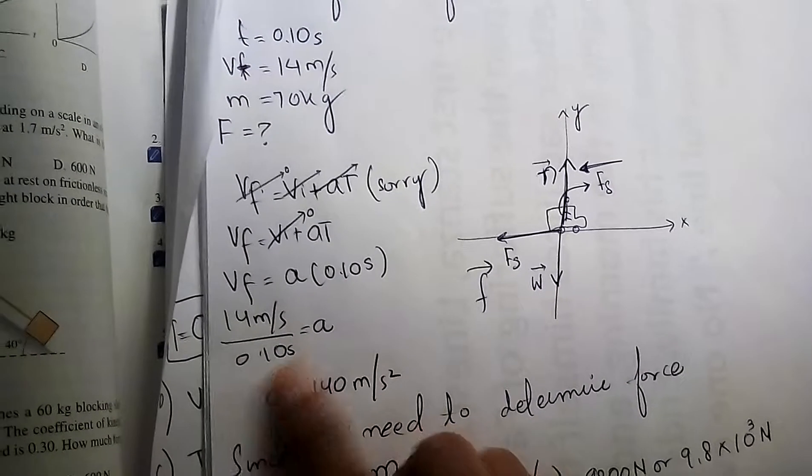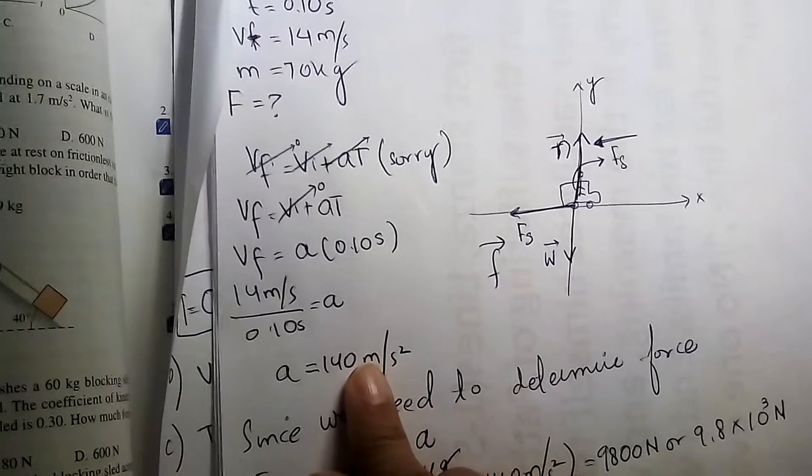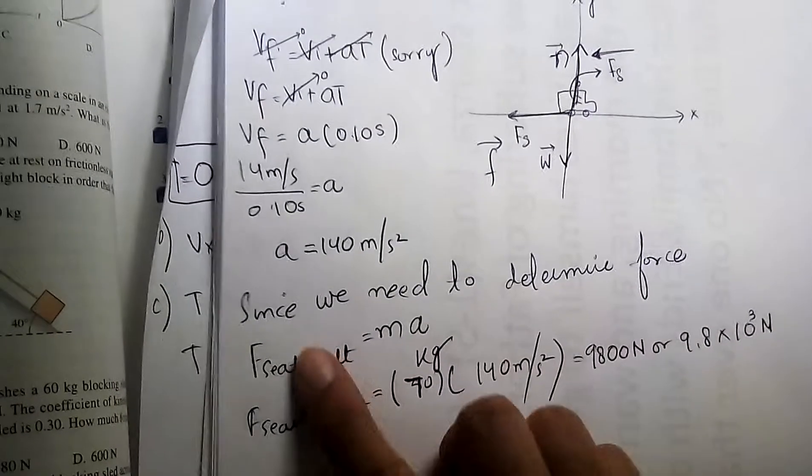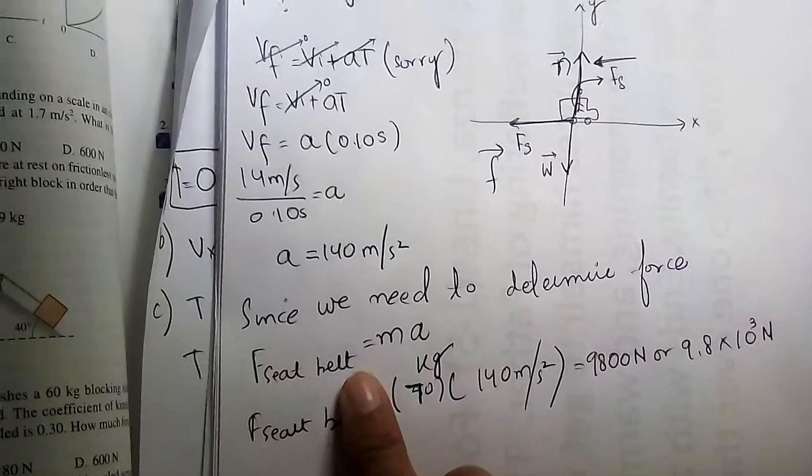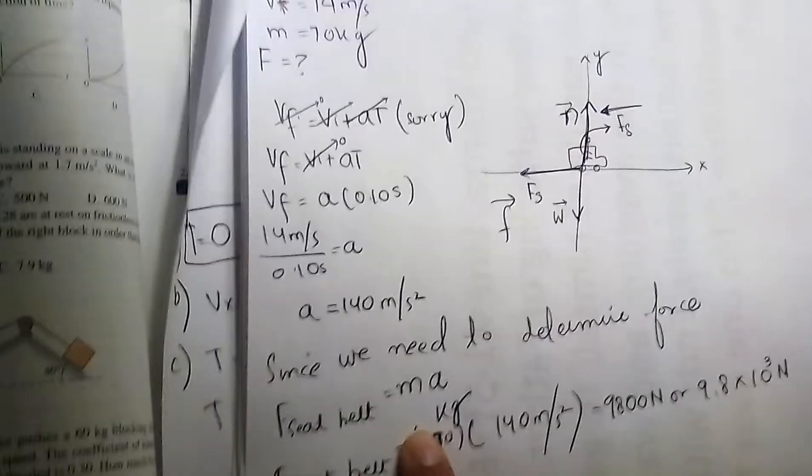So Vf minus Vi over t gives us the acceleration. That's all we need. Force of seatbelt equals Ma, using the acceleration we calculated.